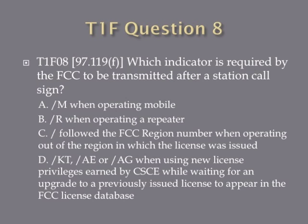Question eight. Which indicator is required by the FCC to be transmitted after a station call sign? A, slash M when operating mobile. B, slash R when operating a repeater. C, slash followed by the FCC region number when operating out of the region in which the license was issued. D, slash KT, slash AE, or slash AG when using new license privileges earned by CSCE while waiting for an upgrade to a previously issued license to appear in the FCC license database.